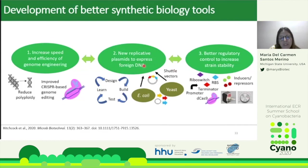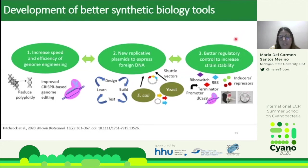We also need better regulatory control to increase strain stability, since most tools currently used in cyanobacteria were developed for E. coli and other prokaryotes. More cyanobacteria-specific tools would provide better control of gene expression. Another important direction is the automation of iterative design-build-test-learn cycles, as has been done in E. coli for producing flavonoids or dodecanol, where most steps are performed by computers.